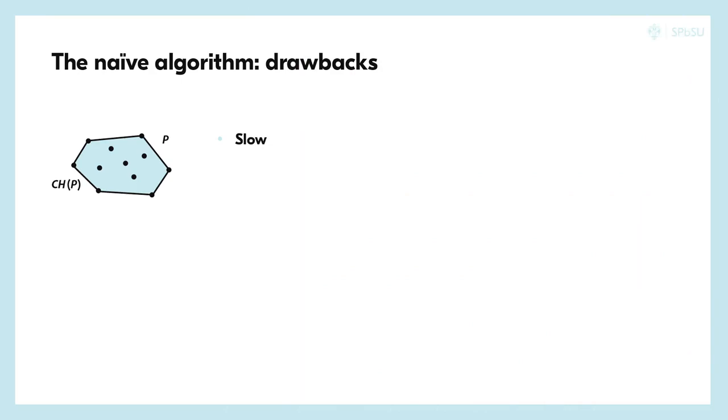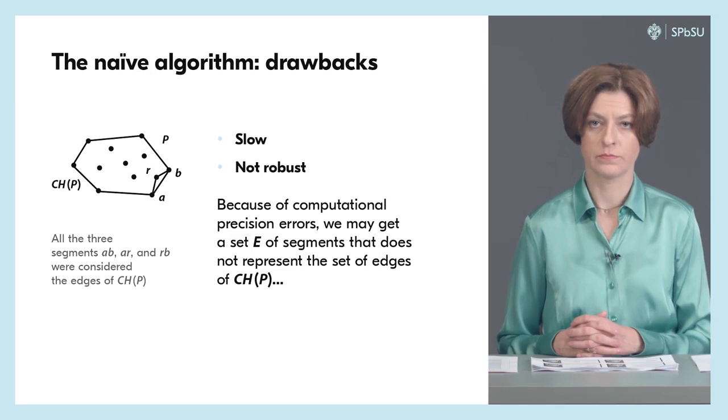As we should have expected, the naive algorithm has certain drawbacks. First, it is obviously too slow. But even a more serious drawback is that it is not robust.